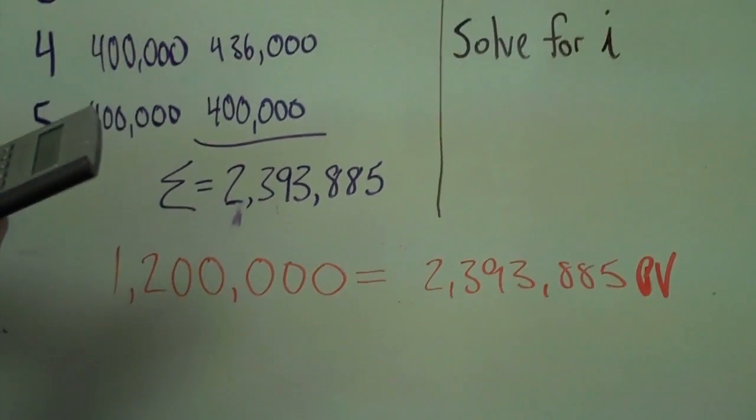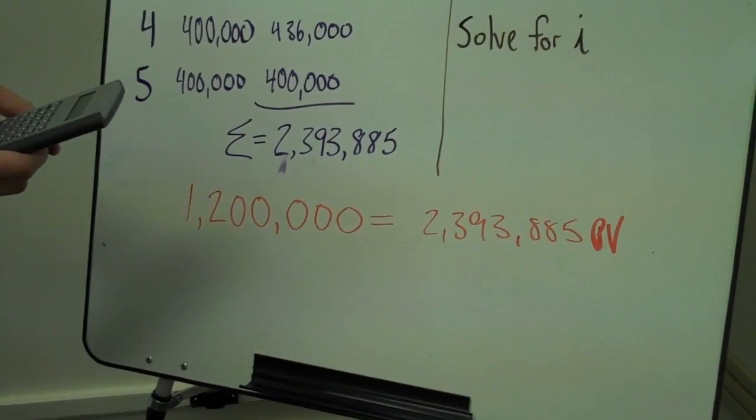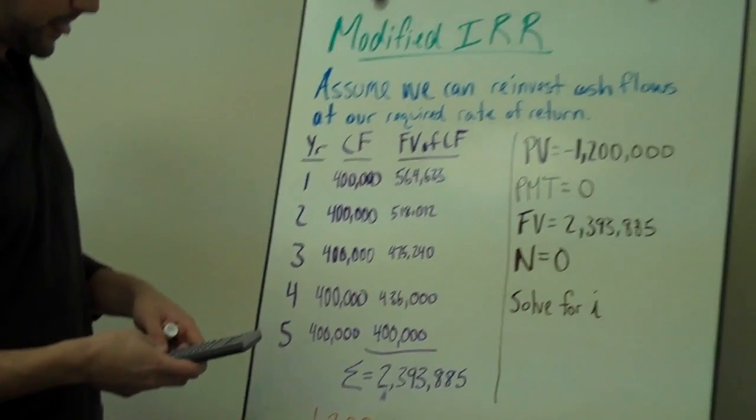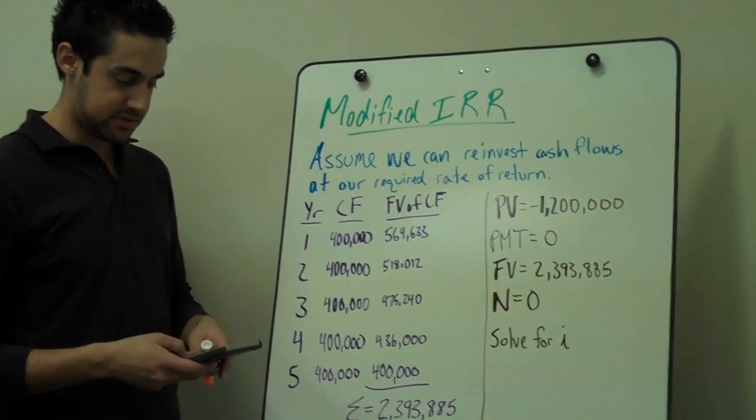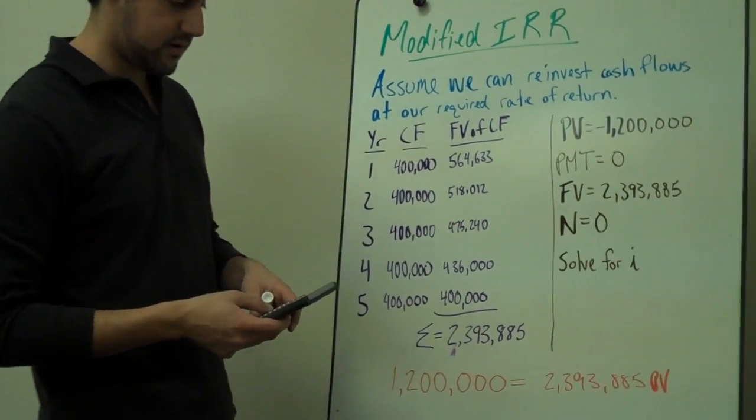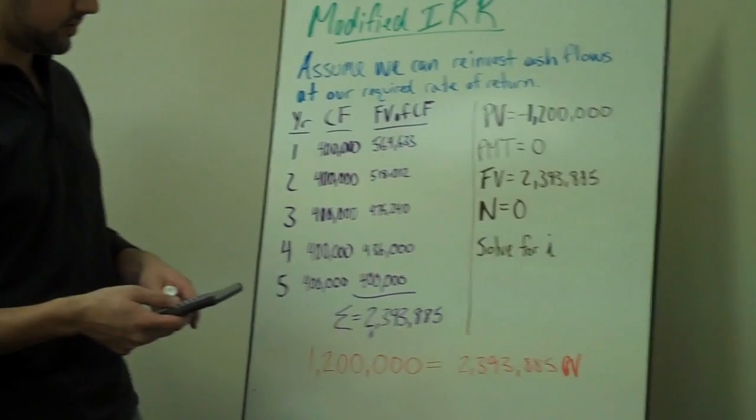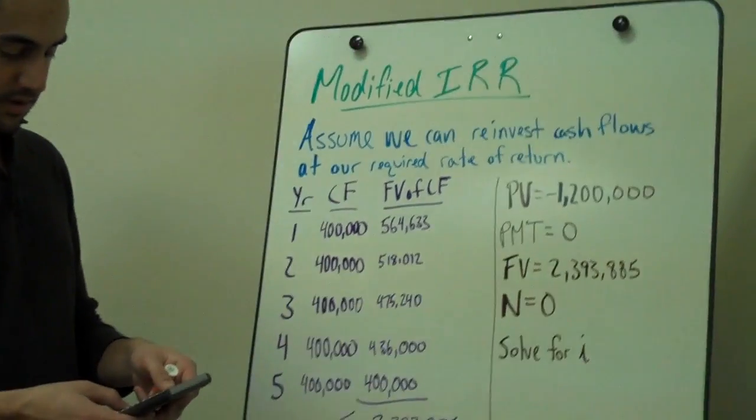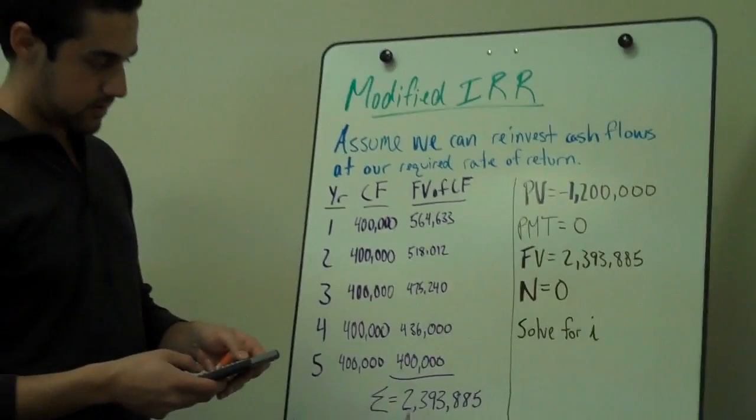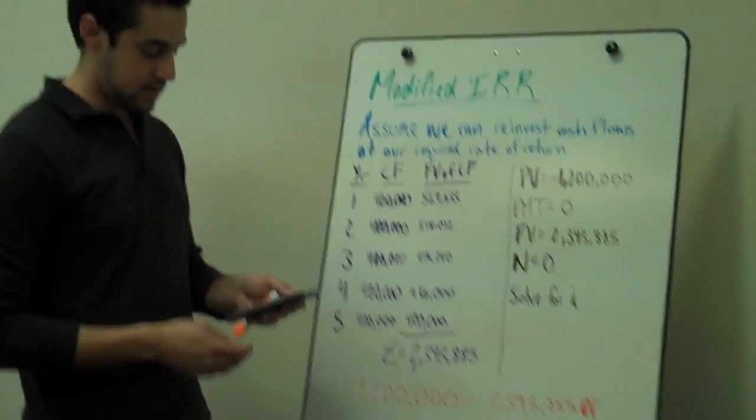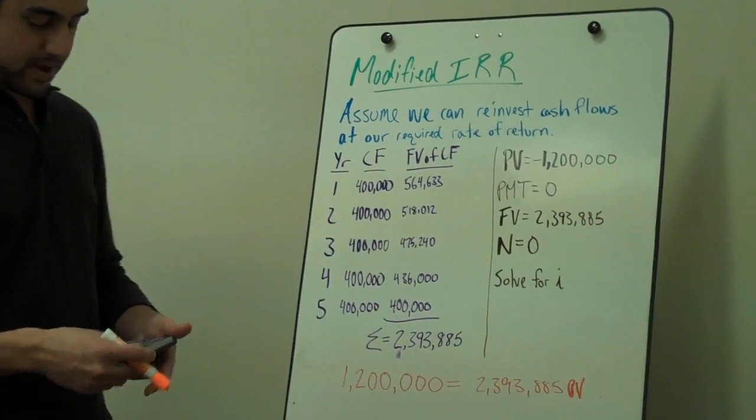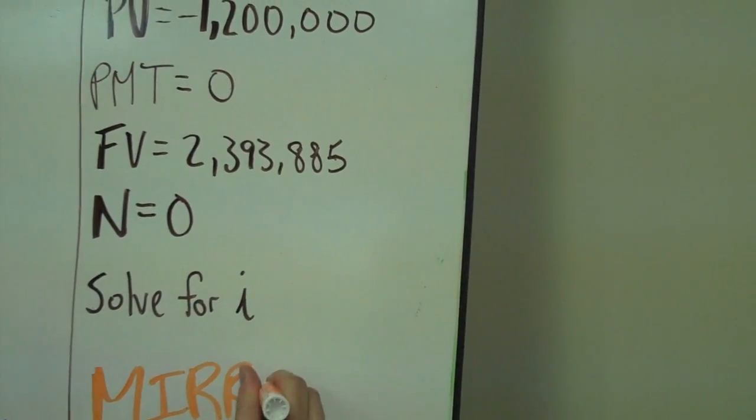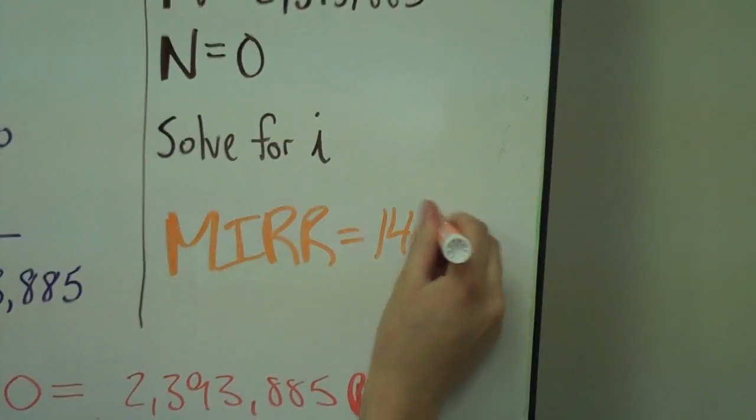So when we look at our calculators, we go negative $1.2 million as our present value. Payment will be zero. $2,393,885 will be our future value. It will be for 5 years. And then we solve for i just like we did. And that will give us our modified internal rate of return of 14.81%.